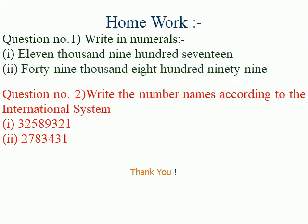Homework: Question number one — write in numerals: (i) 11,917; (ii) 49,899. Question number two — write the number names according to the international system: (i) 32,589,321; (ii) 278,343. Thank you.